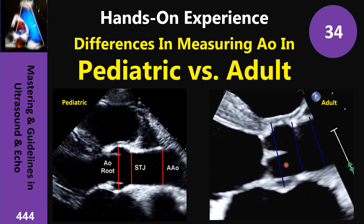But in adult echocardiography, we measure at end-diastole, when the valve is closed. We measure leading edge to leading edge, which means outer to inner. Sinotubular junction: the same — outer to inner. And ascending aorta: outer to inner.